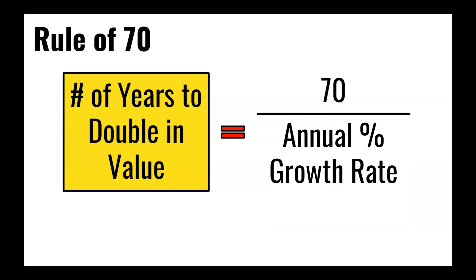When it comes to measuring how quickly the economy doubles in size, we use what's called the Rule of 70 — sometimes the Rule of 72. It's really an exponential function looking at how long it takes for something to double given a percentage growth rate. We do 70 divided by the annual percentage growth rate to determine how many years it would take for the economy to double. So when the economy is growing at 2% a year, it would take approximately 35 years for the economy to double in size.